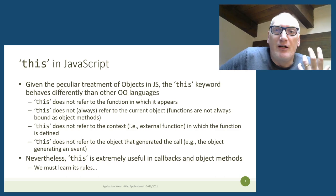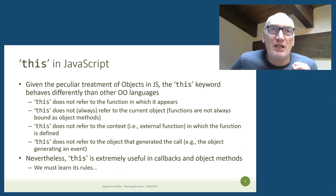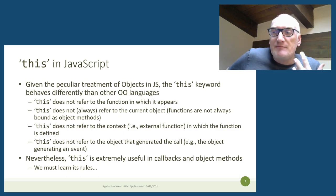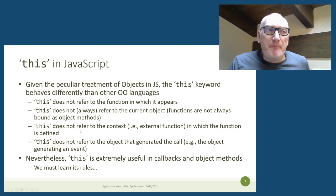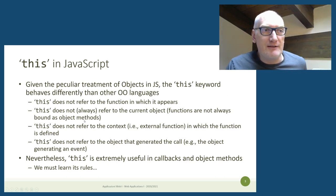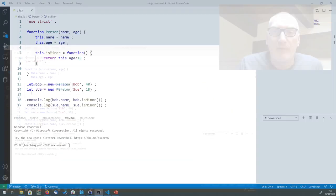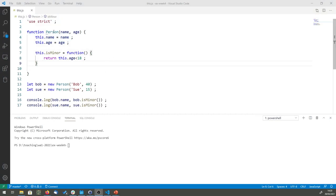We already know that `this` refers to some object. In Java, for example, `this` always refers to the instance of the class in which it appears — it's lexically defined. But those rules from other programming languages don't nicely translate into JavaScript. Let's consider an example: a simple function to create a person, used as a constructor function for building a new object.